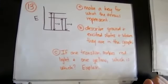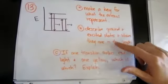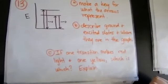Number 13. So this is a diagram, an electron transition diagram, and you have to answer these three questions about that diagram.